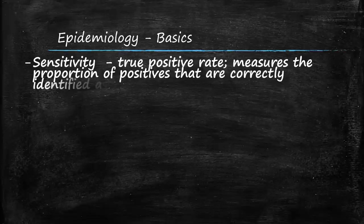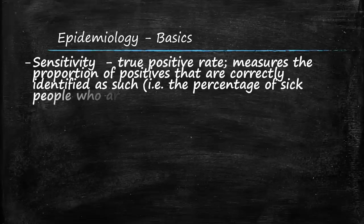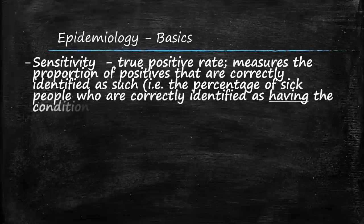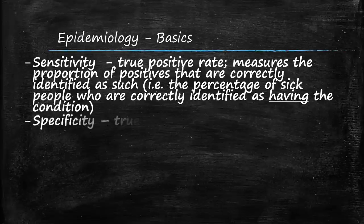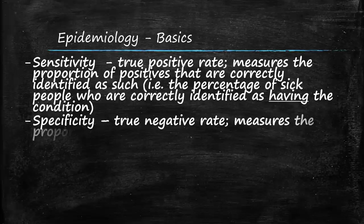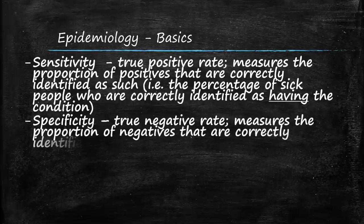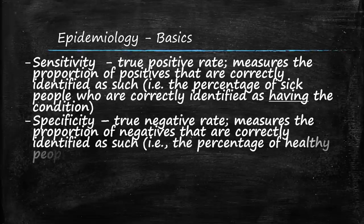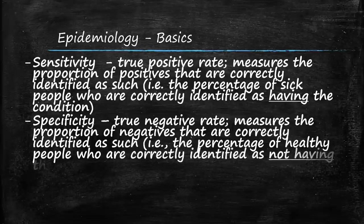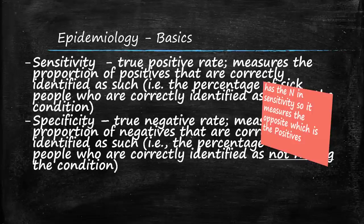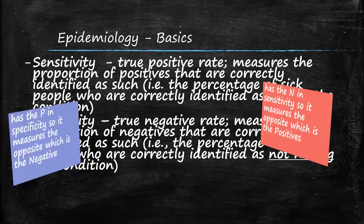Sensitivity is the true positive rate — it measures the proportion of positives that are correctly identified as such; in other words, the percentage of sick people who are correctly identified as having the condition. Conversely, specificity is the true negative rate, measuring the proportion of negatives correctly identified as such — the percentage of healthy people correctly identified as not having the condition. To remember these: sensitivity has an N, so it measures positives; the P in specificity measures the opposite, which is negative.